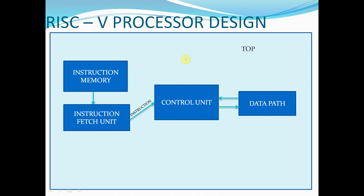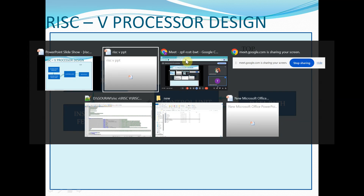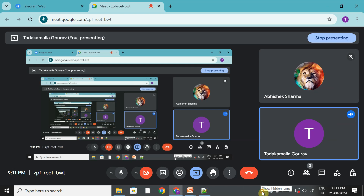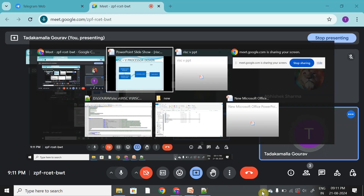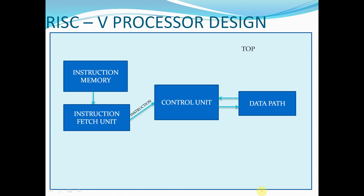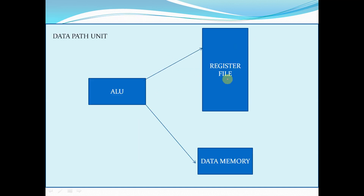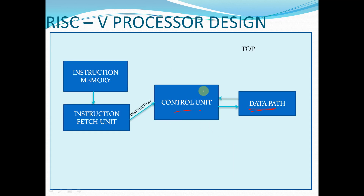From this session we will start the RISC-V processor design using Verilog. In this processor design series, we are going to design the following modules: instruction memory, instruction fetch unit, control unit, and data path. The data path consists of the ALU, register file, and data memory. These are the units we are going to design using Verilog.